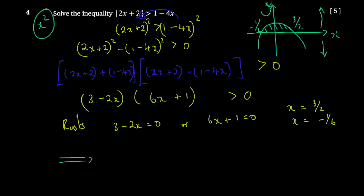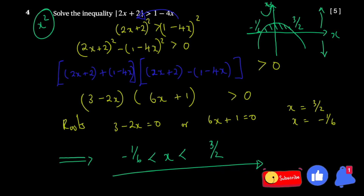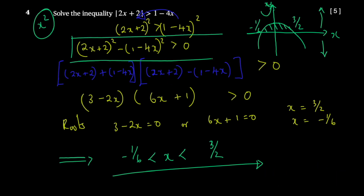The solution is -1/6 < x < 3/2. That's essentially how you go about it. You square both sides, then use difference of two squares to avoid expanding. If you do expand, you'd have to factorize again — try it and verify you get the same roots. Using difference of two squares saves immense time in an exam.